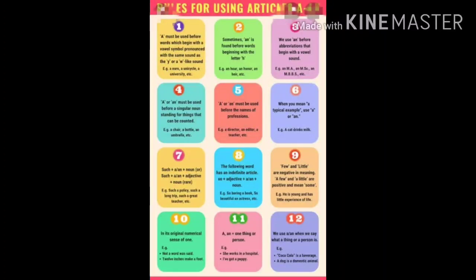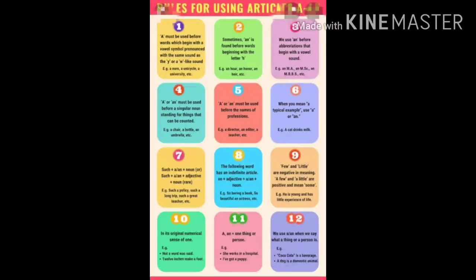Fourth point: A or AN must be used before a singular noun standing for things that can be counted. Example: a chair, a bottle, an umbrella. Fifth point: A or AN must be used before the names of professions. Example: a director, an editor, a teacher. Sixth point: when you mean a typical example, use A or AN. Example: a cat drinks milk.